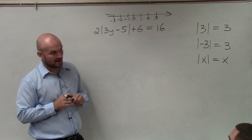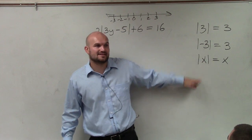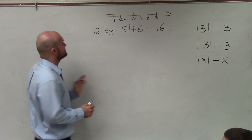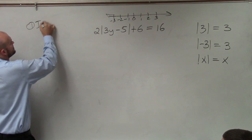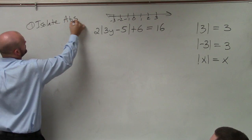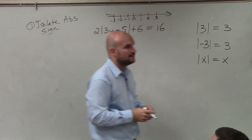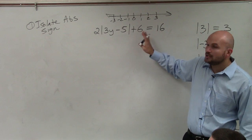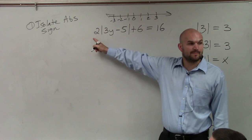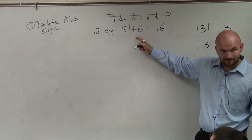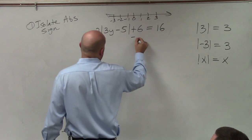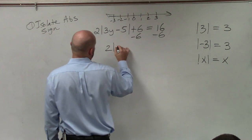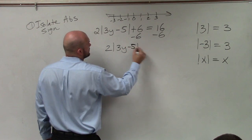To solve an absolute value, you could plug in a negative x or a positive x, and either way it's always going to equal x. So the first step is to isolate the absolute value sign — 'abs' represents absolute value. Pretend it's like a variable in a literal equation and undo what's happening to it. The absolute value sign is being multiplied by 2 and added by 6, so we always undo addition and subtraction first. Subtract 6 on both sides, giving 2|3y − 5| = 10.